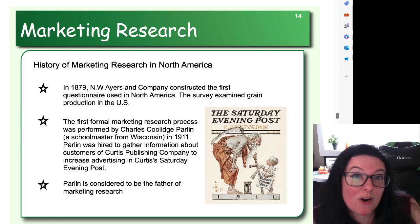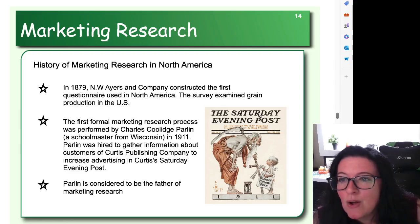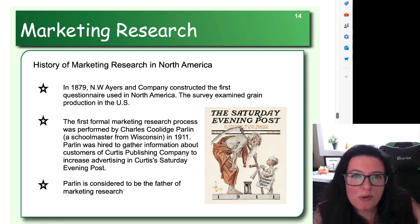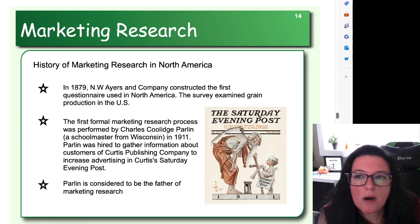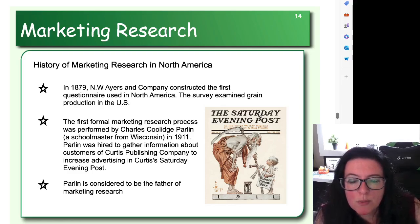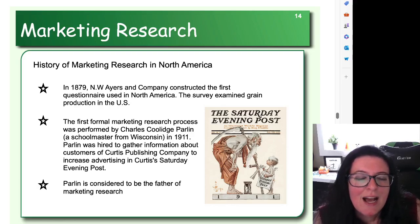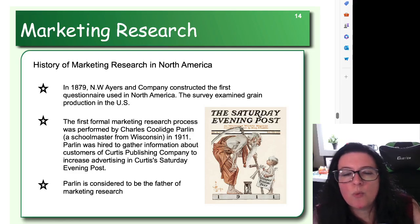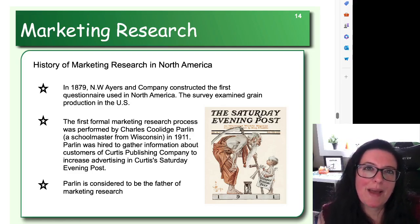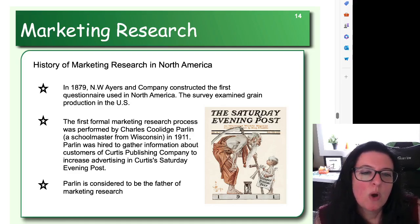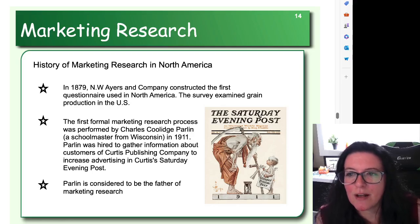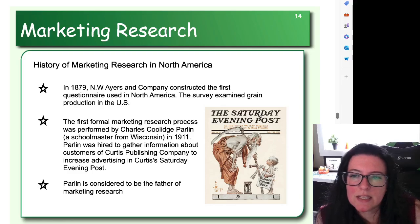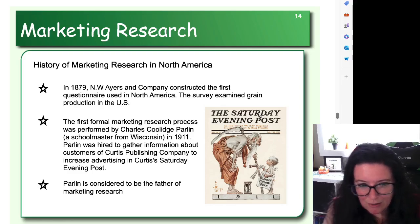This information was then used by companies like the Nickel Shepherd Company to manufacture agricultural machinery. So if we expect there's going to be more grain production over the next couple of years, people are going to need to buy more equipment. We then see the first formal marketing research process created by Charles Coolidge Parlin, a schoolmaster in Wisconsin, in about 1911. Parlin was hired to gather information about customers of the Curtis Publishing Company to help them increase their advertising in the Saturday Evening Post — to determine whether paying for advertisements there would actually be beneficial, and how much of their customer base actually reads that publication. Charles Coolidge Parlin is considered to be the father of marketing research.